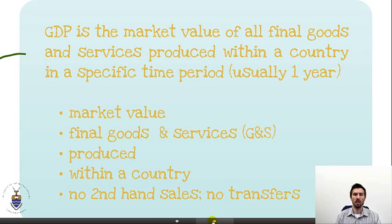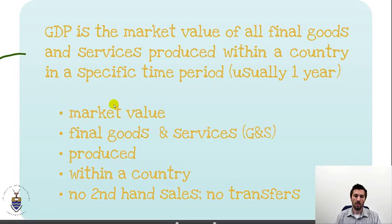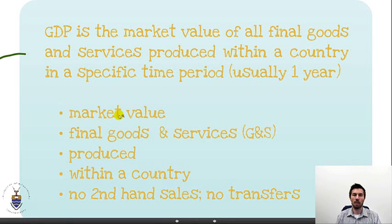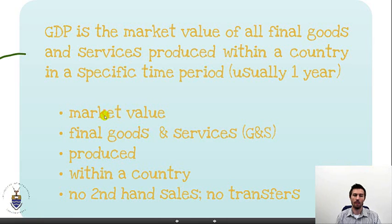There are a couple of important parts in this definition. The first is that we are dealing with market value. Market value means that it has an associated price — a price that is measured in monetary terms. In South Africa, as we saw in the previous part, South African GDP was almost three trillion Rand. So it is a market value measured in Rand terms, Rand being a monetary value.